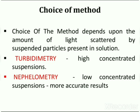The choice of method depends upon the amount of light scattered by suspended particles present in solution. Turbidimetry is used for highly concentrated suspensions, while nephelometry is used for low concentrated suspensions for more accurate results.